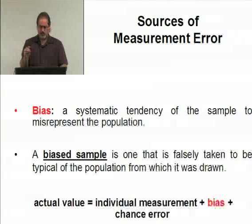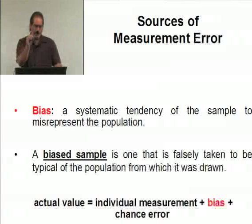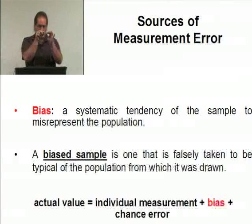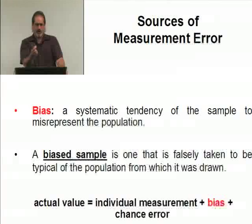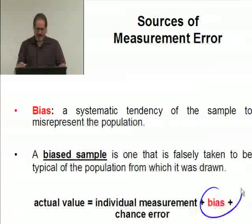A biased sample is one that is falsely taken to be typical of the population from which it's drawn, but it's not. Now, in our circular example, you go out and you measure the circumference. And you use a string, you put it on a ruler to measure the length. If, every time you did it, you always rounded up to the nearest eighth inch or nearest quarter inch, you're producing a bias. You are overestimating every single time.